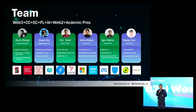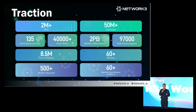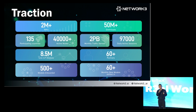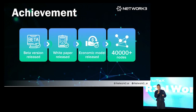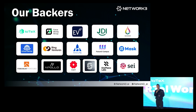This is our partnership resource, and our team is very dynamic with a lot of experience in both Web2 and Web3. This is our traction — if you go to depinscan.io, shout out to depinscan.io, you can find our live nodes right now, close to 50k. Our achievements so far include releasing our beta version, white paper, and tokenomics, and we have close to 15k live nodes.